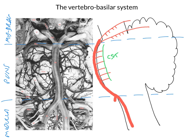Now let's add the anterior inferior cerebellar artery. The anterior inferior cerebellar artery supplies the anterior inferior surface of the cerebellum, but also on its way it throws off little branches to the caudal pons. So the pons receives branches from the anterior inferior cerebellar artery.